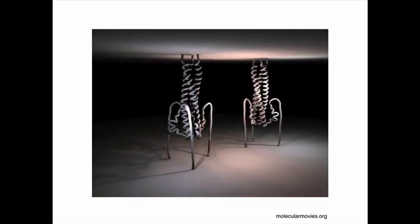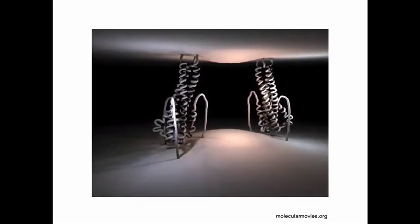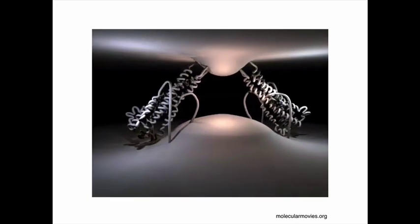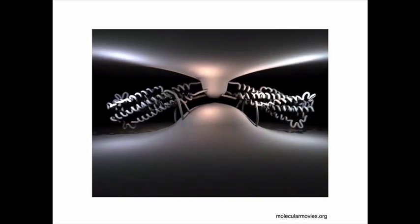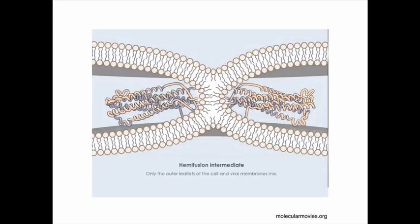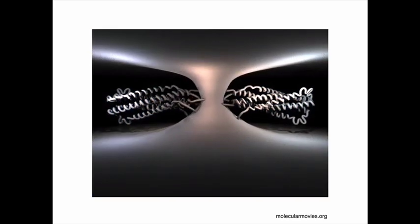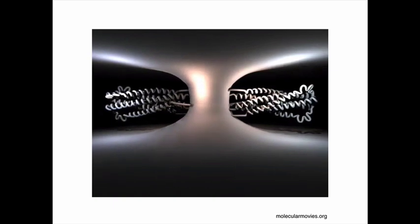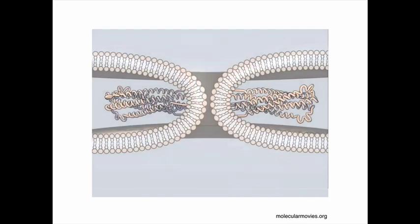In the animation, we can see a trimer of the TM segment, with the viral membrane and cell membrane shown. As this construct changes conformation, it assumes an alpha-helical conformation that brings the viral and cell membranes together. The first fusion of the outer leaflets is called hemifusion — only the outer leaflets of the cell and viral membrane are fused. Then the inner leaflets fuse too, making a pore through which the viral contents are transported into the cell interior.